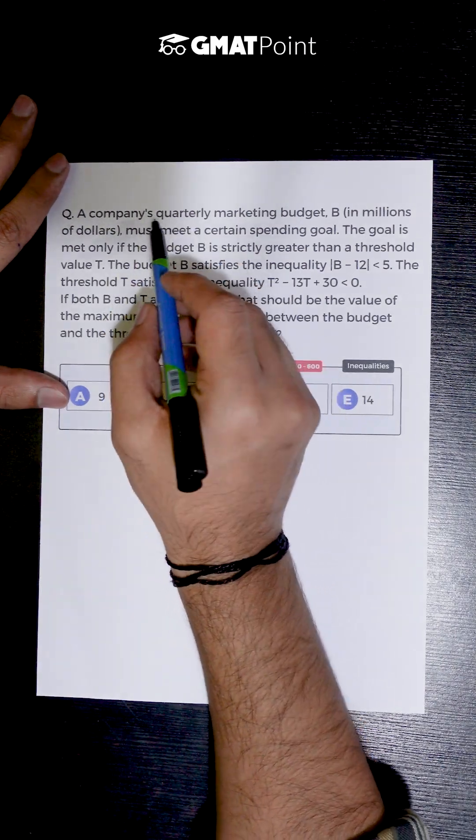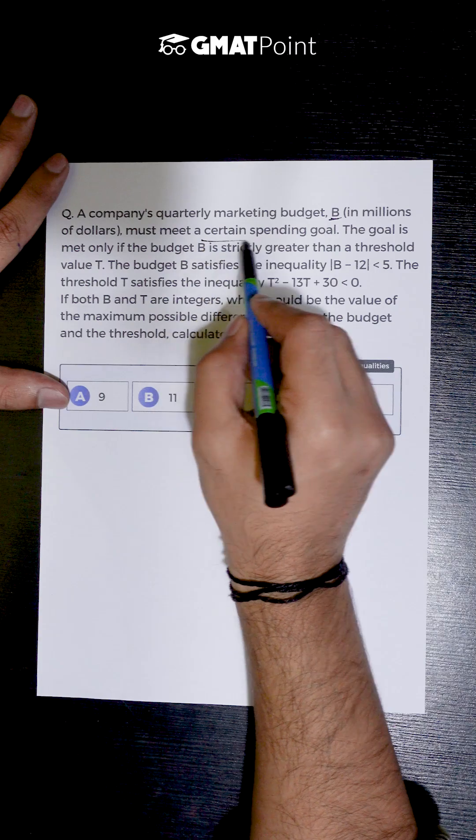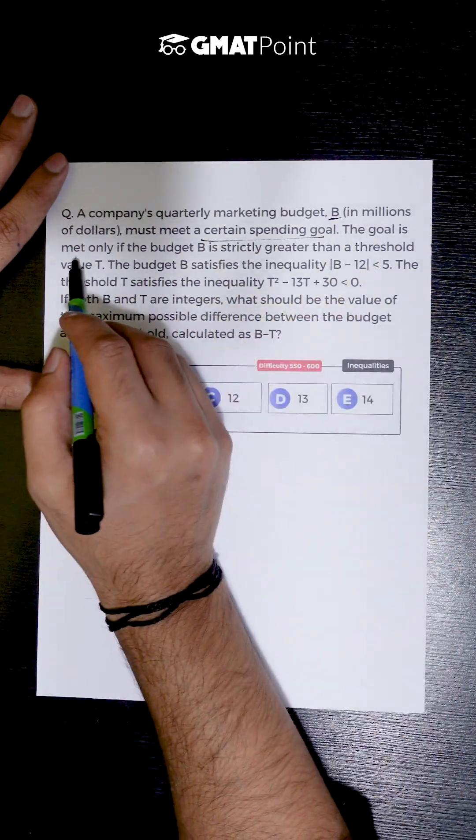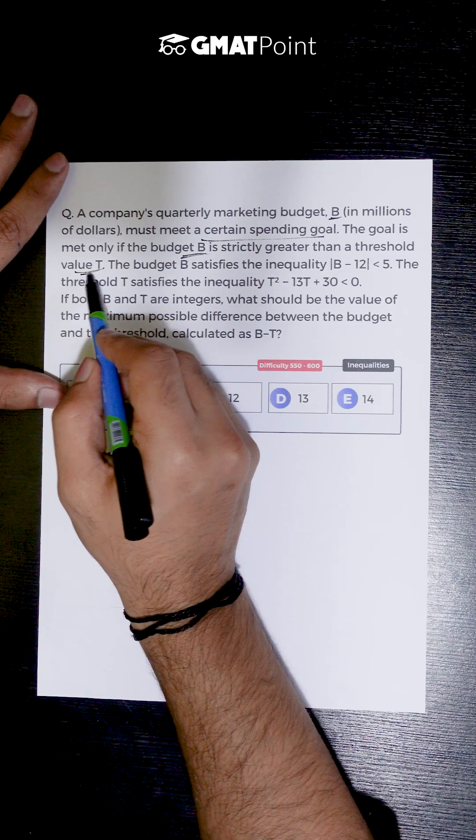Let's see how to solve this question. A company's quarterly marketing budget B must meet a certain spending goal. The goal is met only if the budget is strictly greater than a threshold value T.